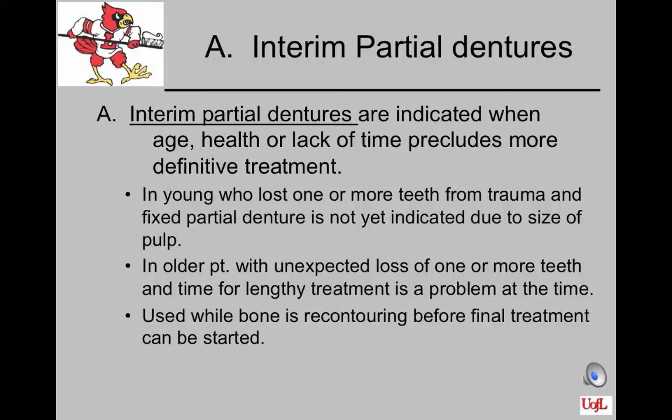An interim partial denture is indicated when the age, health of the patient, or lack of time precludes more definitive treatment. In a young person, they may have lost a tooth from trauma and it's too early to make a fixed partial denture because of the size of the pulps remaining in the natural teeth. It's also used while bone is re-contouring before final treatment begins.